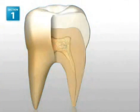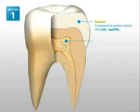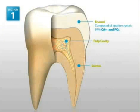Enamel is composed of various types of apatite crystals, which are made up of 97% calcium and phosphate. At first glance, all apatites seem similar in composition, but additional materials like fluoride change their physical properties and solubility. With the presence of fluoride, fluorapatite is 20% harder and less soluble than hydroxyapatite, the main component of tooth enamel.